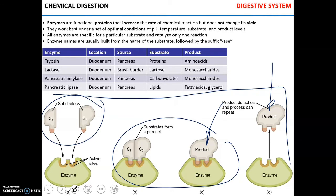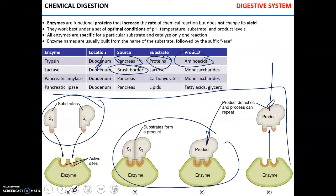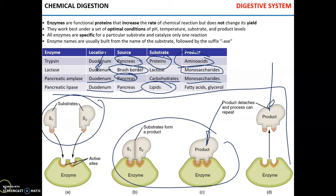Enzyme names usually end with '-ase.' Four key enzymes to know: trypsin, produced by the pancreas, released in the duodenum, breaks down proteins into amino acids; lactase, a brush border enzyme in the duodenum, breaks down lactose into monosaccharides; pancreatic amylase, produced by the pancreas and released in the duodenum, breaks down carbohydrates to monosaccharides; and pancreatic lipase, which breaks down lipids into fatty acids and glycerol.